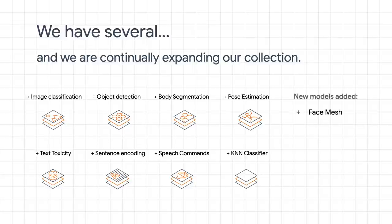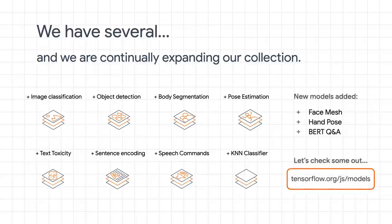Here you can see several popular pre-made models available with TensorFlow.js today. Things like object detection, or body segmentation — the act of classifying each pixel in an image to determine if it belongs to a human body or not. Or what about pose estimation to understand where the joints in the human skeleton may actually be? There are also various natural language processing models, such as sentence encoding or our BERT Q&A model, and many, many more.